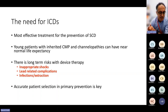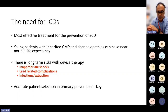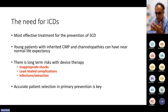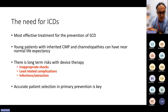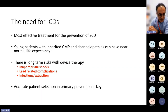ICDs are the most effective treatment for the prevention of sudden cardiac death, though not for preventing ventricular arrhythmia itself — so a holistic approach is needed. Young patients with inherited cardiomyopathies and channelopathies can have normal life expectancy with appropriate therapy, but there is a risk of sudden cardiac death. Giving a device early in life carries long-term risks: inappropriate shocks, lead-related complications, and infections and extraction. Accurate patient selection in primary prevention is therefore key.